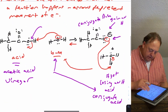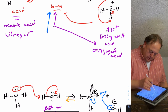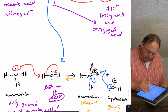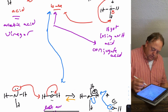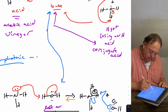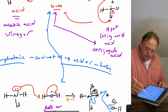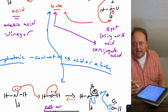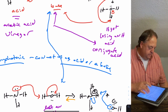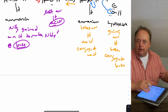Notice that between these two reactions, water is acting as a base in one reaction and as an acid in the other. So here's a new definition: water is said to be an amphoteric compound. That simply means compounds that can act as either an acid or a base, depending on what they're reacting with.